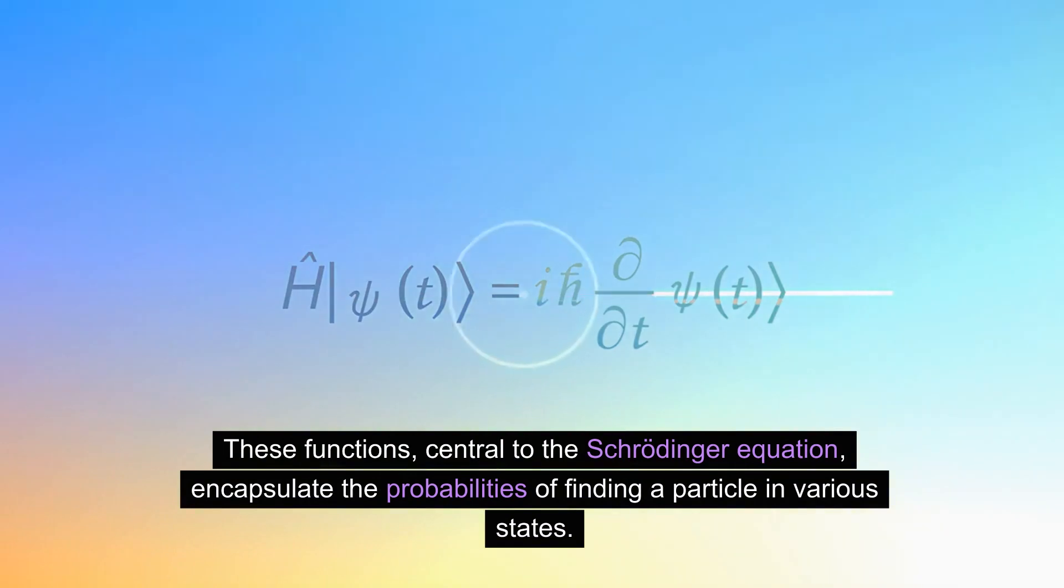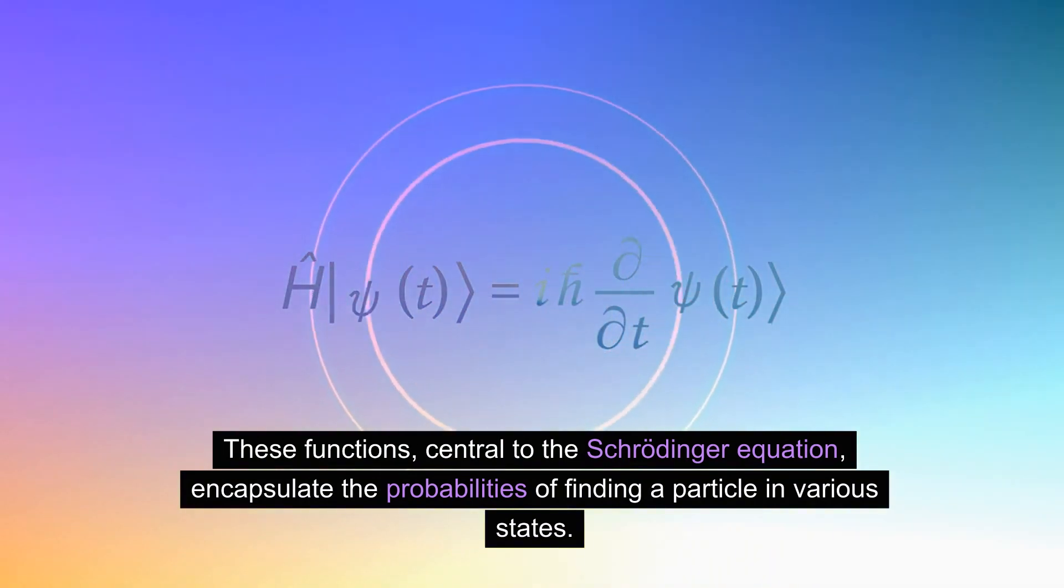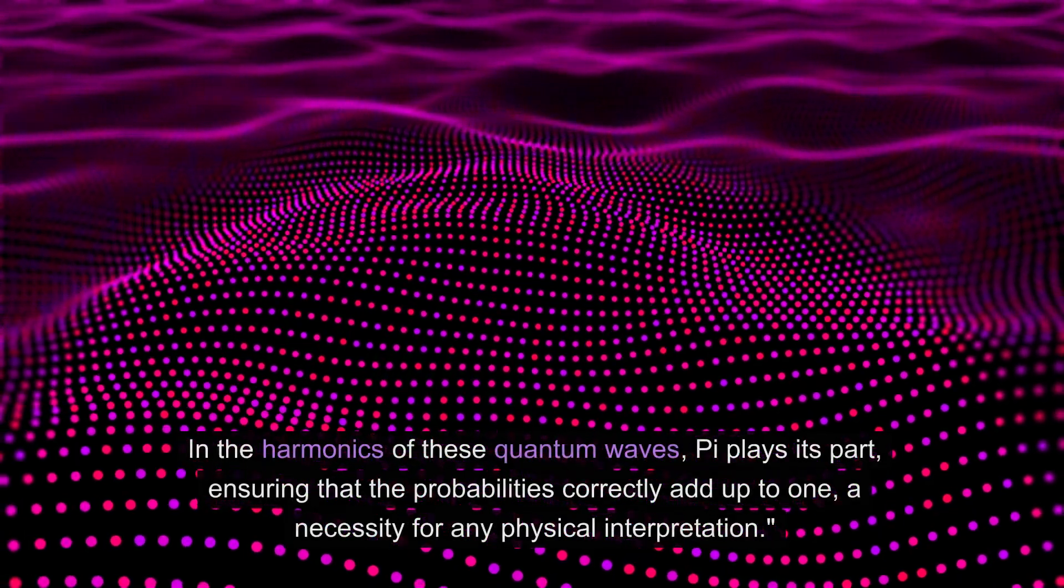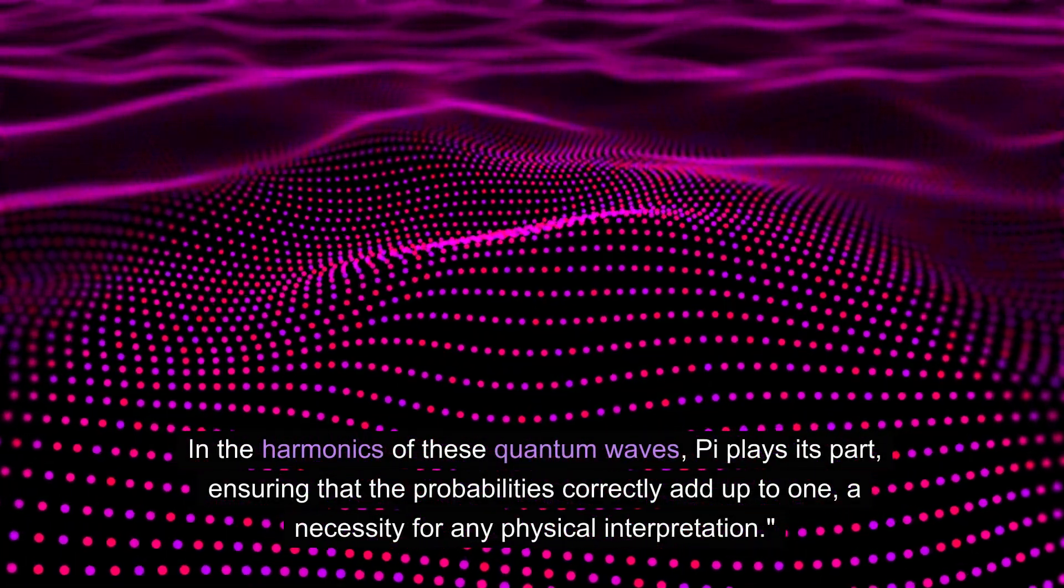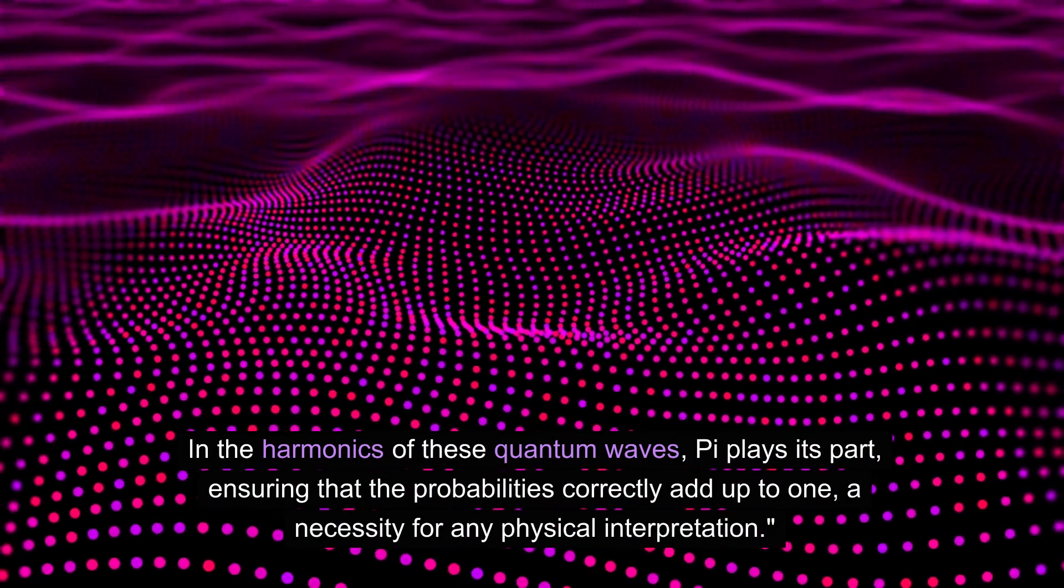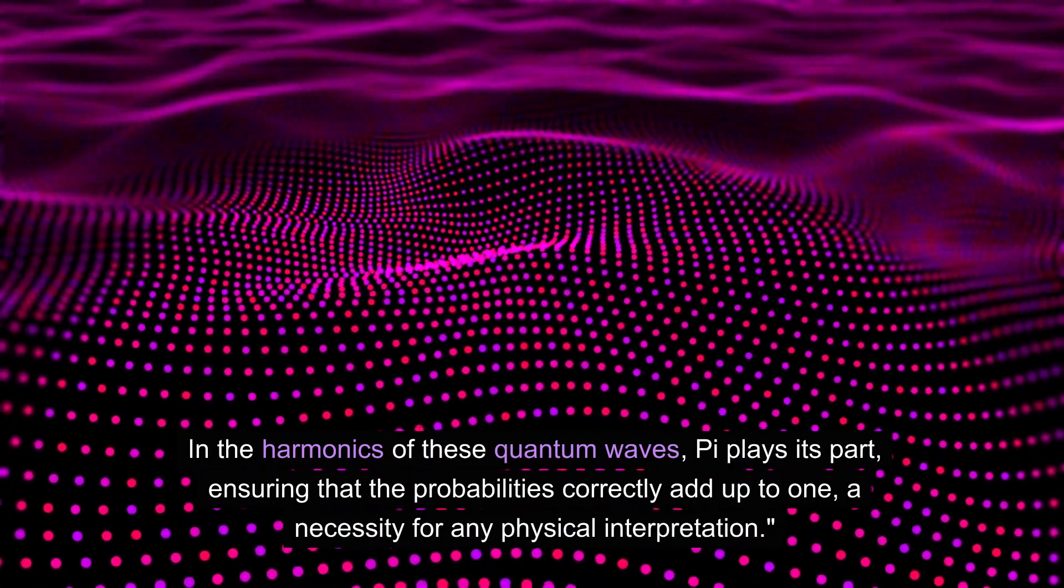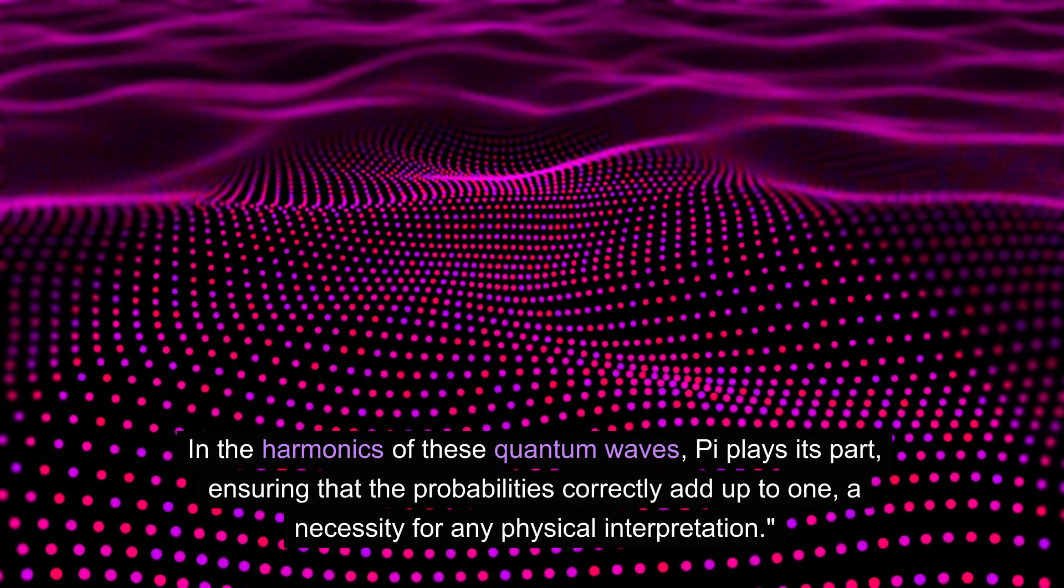These functions, central to the Schrodinger equation, encapsulate the probabilities of finding a particle in various states. In the harmonics of these quantum waves, pi plays its part, ensuring that the probabilities correctly add up to 1, a necessity for any physical interpretation.